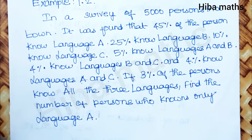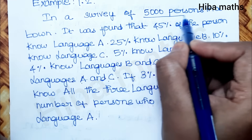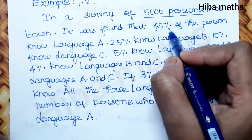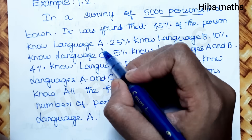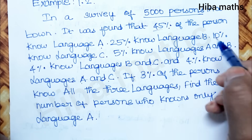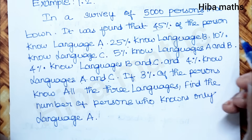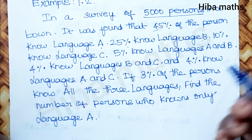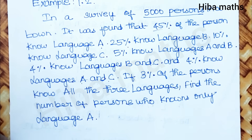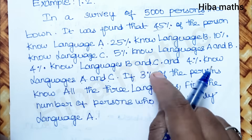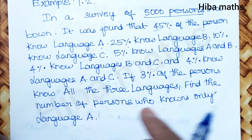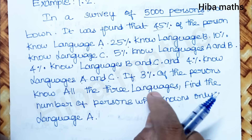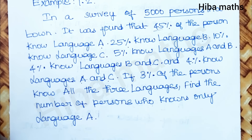Let's understand what we need. There are 5000 persons. 45% know language A, 25% know language B, 10% know language C, 5% know A and B, 4% know B and C, 4% know A and C, and 3% know all the languages.